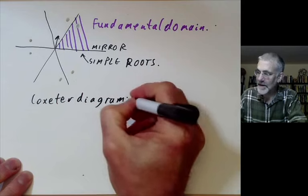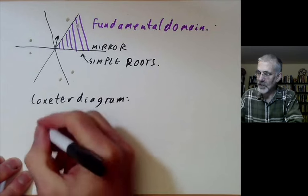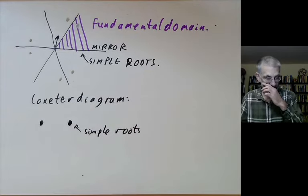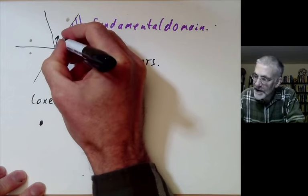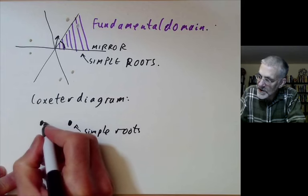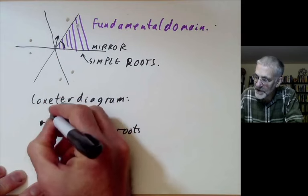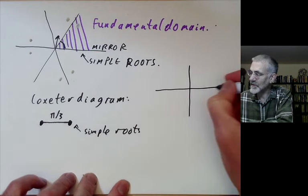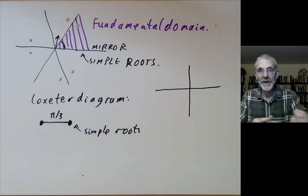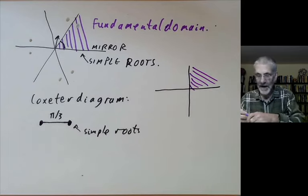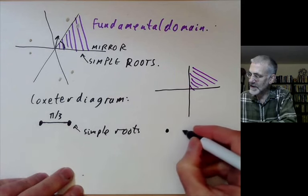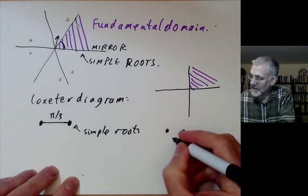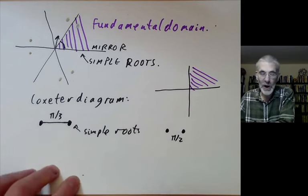The Coxeter diagram works as follows: you draw a point for each simple root. So if there are two simple roots, there are two points in the Coxeter diagram. You indicate the angle between simple roots by drawing various lines between the points. For instance, if there's an angle of pi over 3, or 60 degrees, you indicate this by drawing a single line. If the angle between two simple roots is pi over 2, you indicate this by drawing no lines between those points.